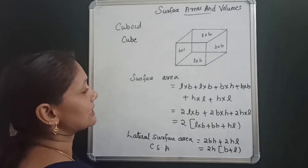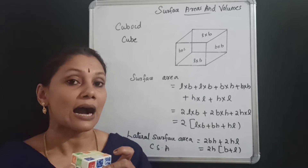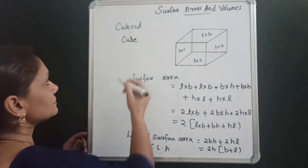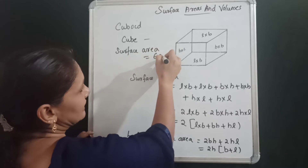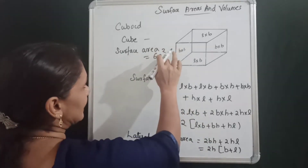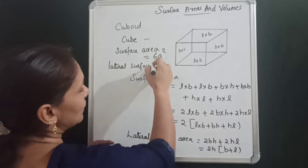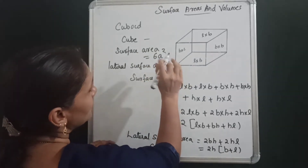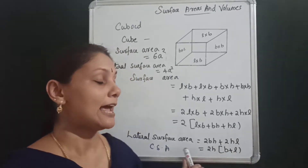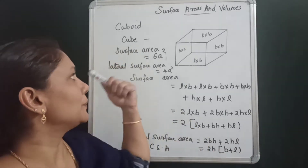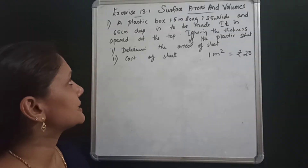For a cube, all sides are equal, each side is A. So the total surface area of a cube equals 6A². The lateral surface area of a cube is 4A². To summarize: cuboid surface area = 2(LB + BH + HL), cuboid lateral surface area = 2H(L + B), cube surface area = 6A², cube lateral surface area = 4A².